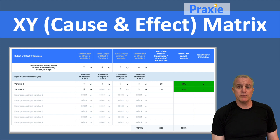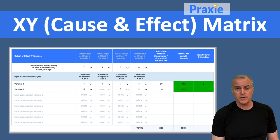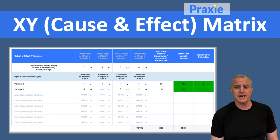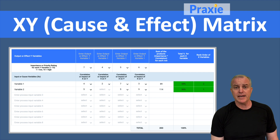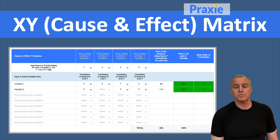If you create a cause and effect matrix and score each of those causes related to those effects, you can essentially prioritize and identify which are the most powerful causes that you want to prioritize, fund, and accelerate in your project. That will give you a sense of what you should be measuring that will have the greatest impact on your success and your customer's success as well.